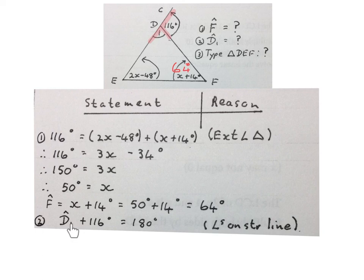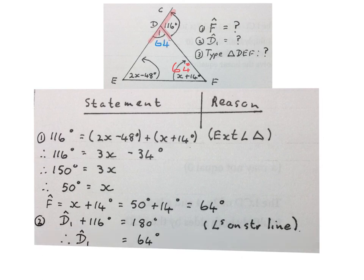Now we can solve for D1. We minus 116 degrees on both sides. So D1 is equal to 64 degrees. And I like to fill it in on the sketch.